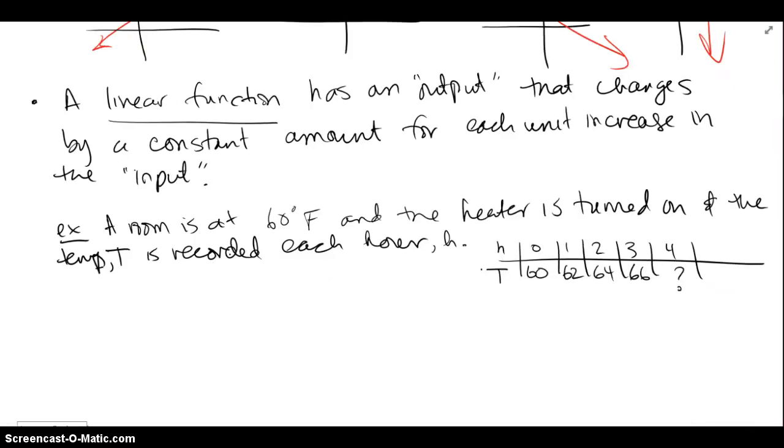A linear function has an output that changes by a constant amount for each unit increase in the input. Whatever input I give it, if I increase it by one unit, the output changes by a constant amount.